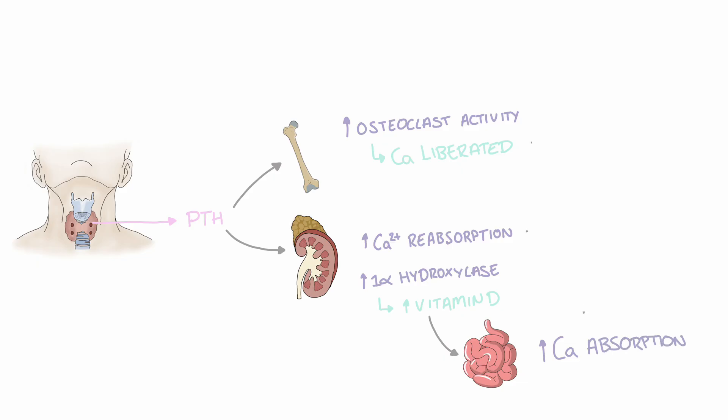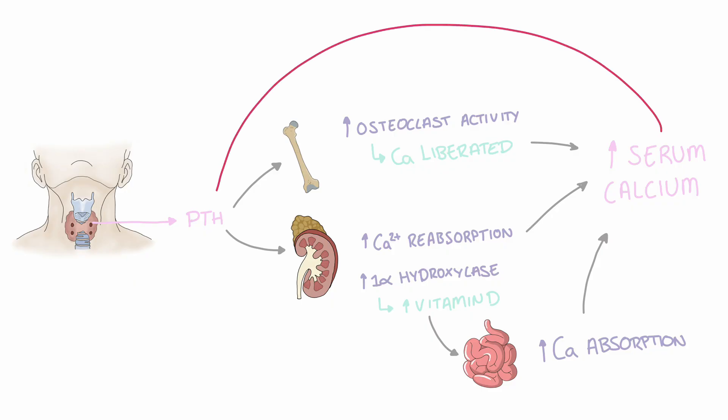All of these factors together raise serum calcium levels. The elevated calcium levels provide negative feedback to the parathyroid gland and so inhibit the release of parathyroid hormone. In hyperparathyroidism, there is dysregulation to this normal pathway and too much parathyroid hormone is released from the parathyroid glands.